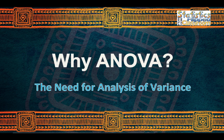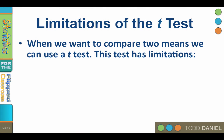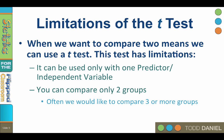A t-test can be used to compare two independent means — remember, t for two? But the t-test has some limitations. The t-test is limited to only one independent variable with two groups, and only one dependent variable. So if we want to compare multiple independent variables or multiple dependent variables, we're out of luck. And the t-test can only compare two means.